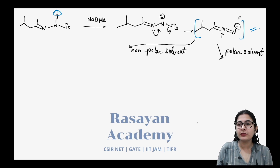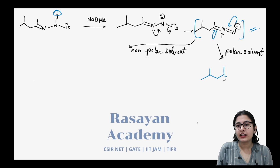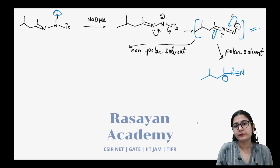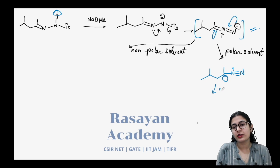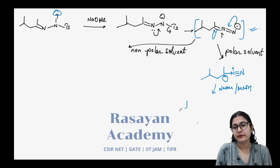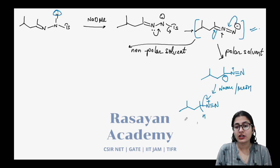Now, what happens in the polar solvent versus the non-polar solvent? In the polar solvent, the bond opens up one by one. You first get a carbanion and a triple bond N⁺ — so you get a carbanion. The carbanion gains electron density from the medium. With sodium methoxide present, a proton is taken away, giving you N≡N.